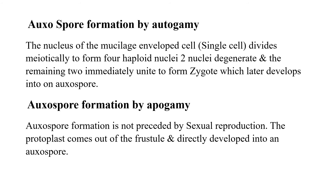Auxospore formation also takes place by apogamy — no sexual reproduction takes place here. You will be surprised: auxospore formation is not preceded by sexual reproduction. The protoplast comes out of the frustule and directly develops into an auxospore. The diatom cell opens its lid, the protoplast comes out, behaves as a zygote, secretes a two-piece wall layer around it, and becomes an auxospore. This is auxospore formation by apogamy.